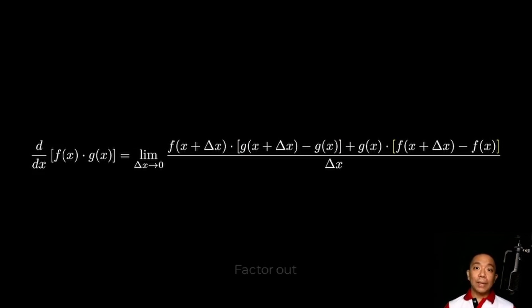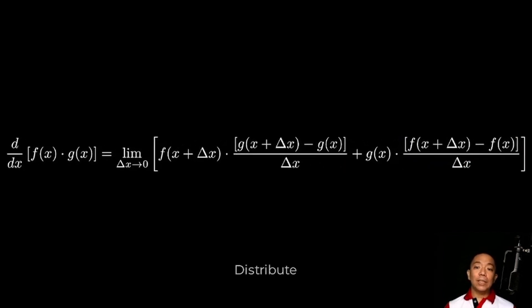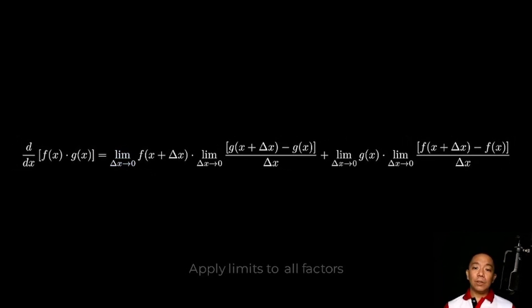Let's observe that our numerator has two terms na lang. And on those two terms, I will distribute my denominator na delta x. Now take a look at this limit. Yung limit sa unahan. Limit as delta x approaches zero. We will apply the limits to all the terms and all the factors like so. At isa-isa natin i-apply lahat ng limits sa lahat ng terms.